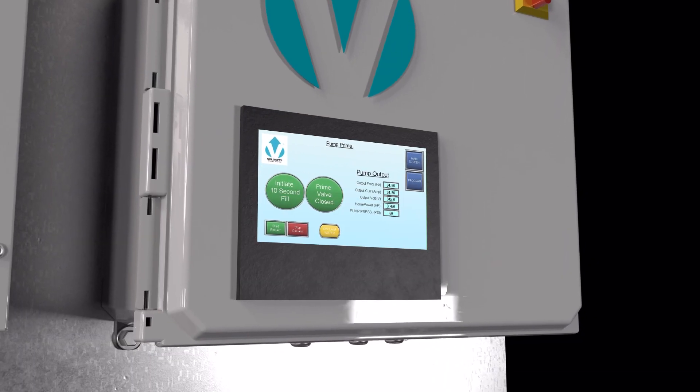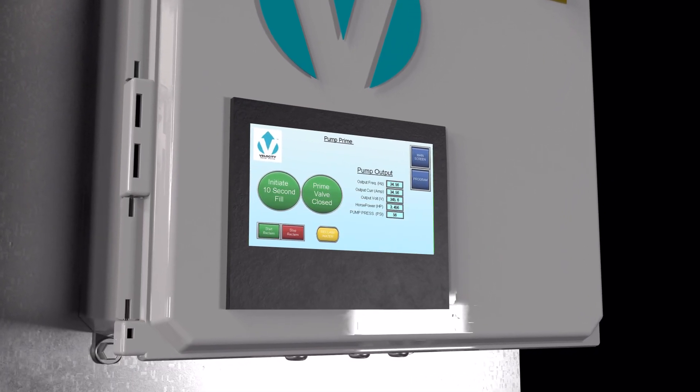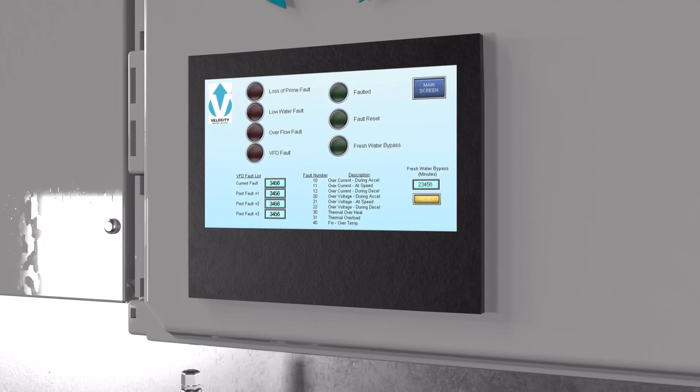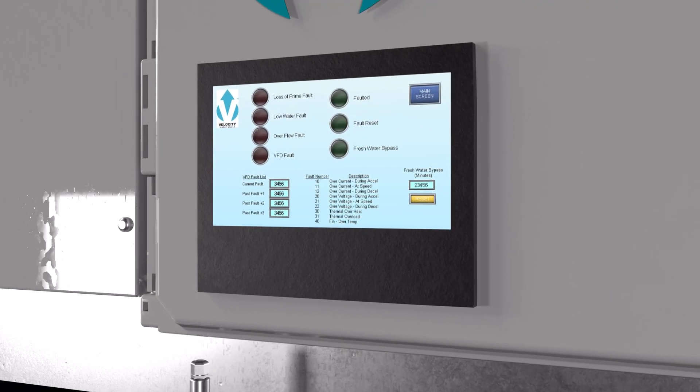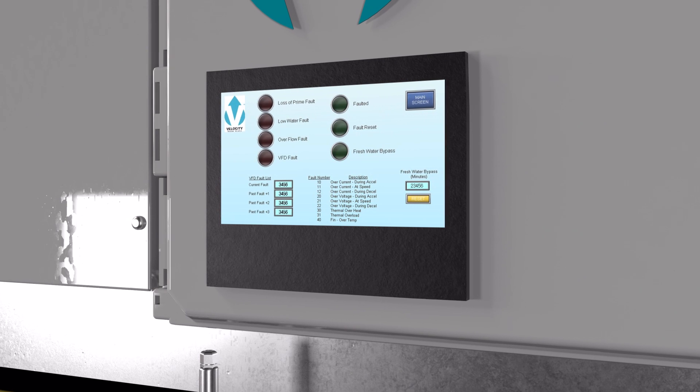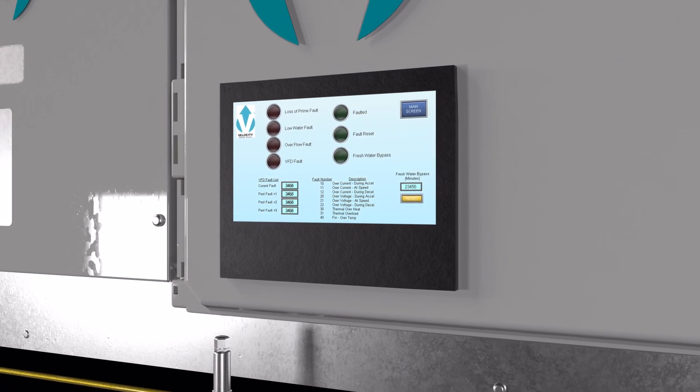The prime circuit allows you to prime the unit directly from the interface with the push of a button. The fault screen provides the fault codes and there is also a light if there is a fault occurring. It's easy to reset and get back up and running.